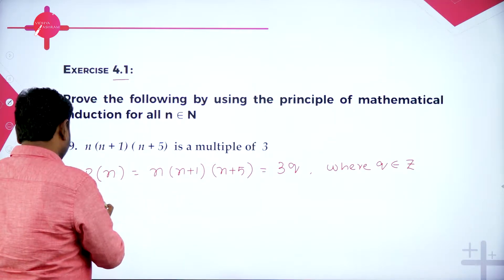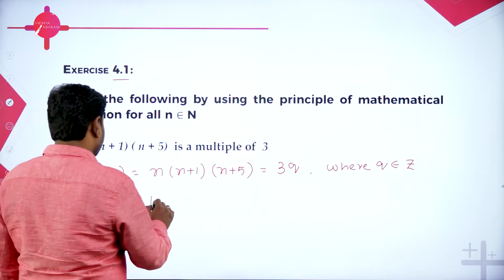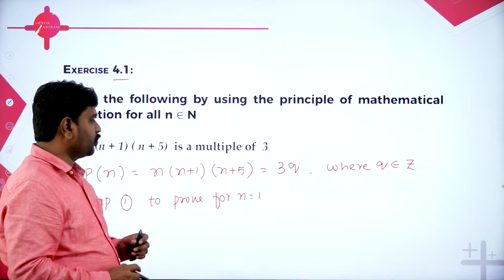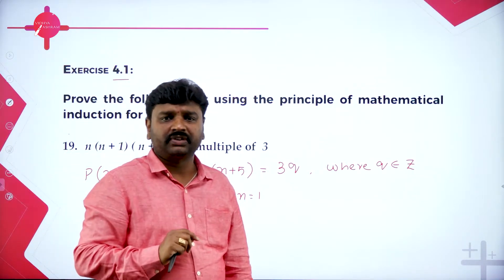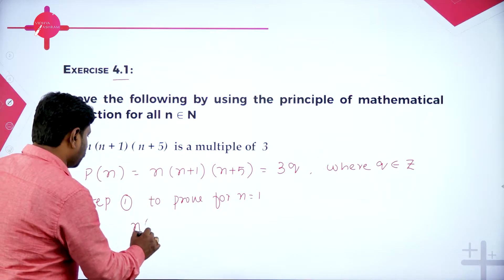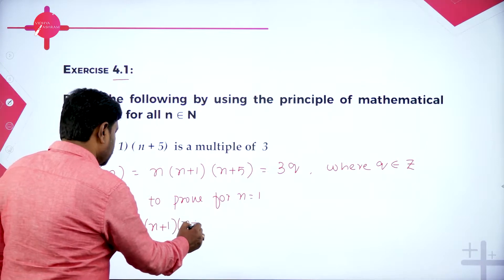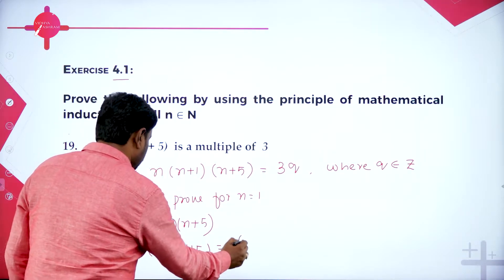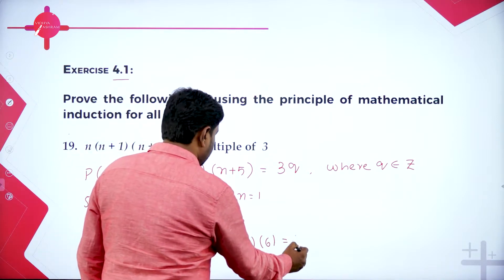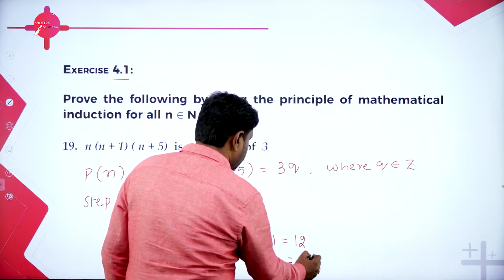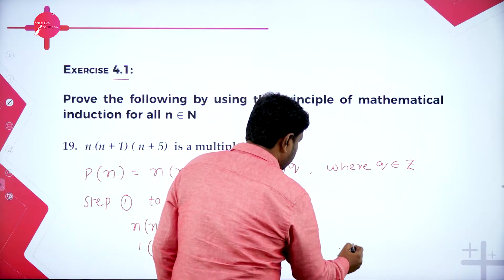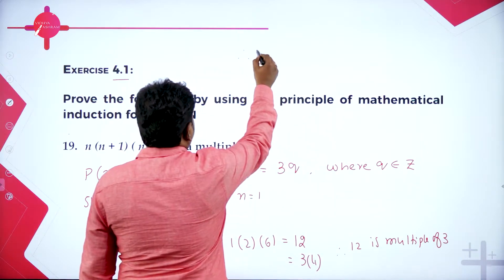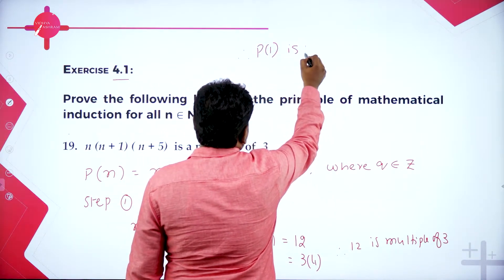So to prove Step 1 — what is Step 1? All of you know: Step 1 is to prove for n equal to 1. In the place of n if I put 1 in the given statement I should get a number which is a multiple of 3. So now n(n+1)(n+5): put n=1, it becomes 1×2×6, which equals 12. Therefore 12 can be written as 3×4, so 12 is a multiple of 3. Therefore P(1) is true.